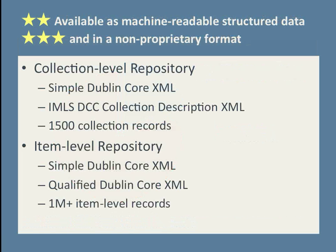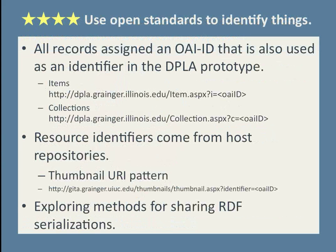Currently, material is available as machine-readable structured data in a non-proprietary format, namely Dublin Core XML, either in a simple variety or as a more advanced IMLS DCC collection description, which is based on the Dublin Core collection application profile. We also republish about 1 million records as simple and qualified Dublin Core that have been harvested from participating repositories. For each of these records, there's an OAI ID that we've also used as an identifier in the URL pattern for our DPLA prototype. So if you know an OAI ID, you can construct a URL for items and collections.